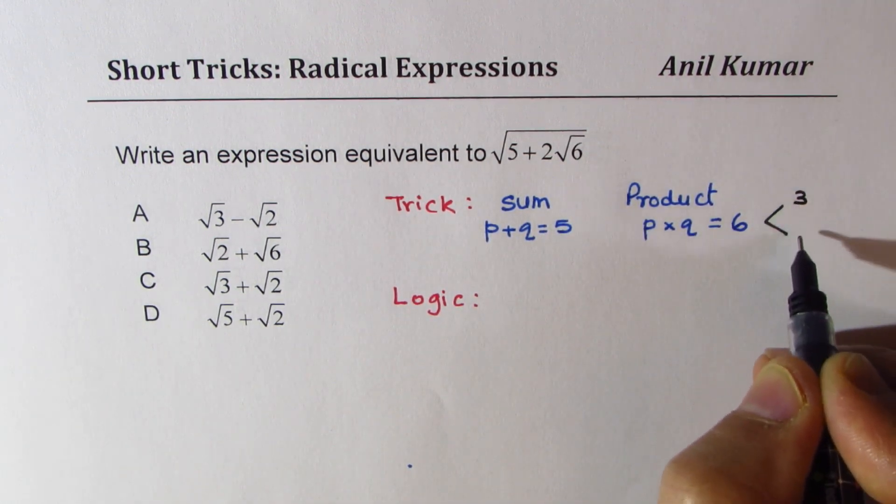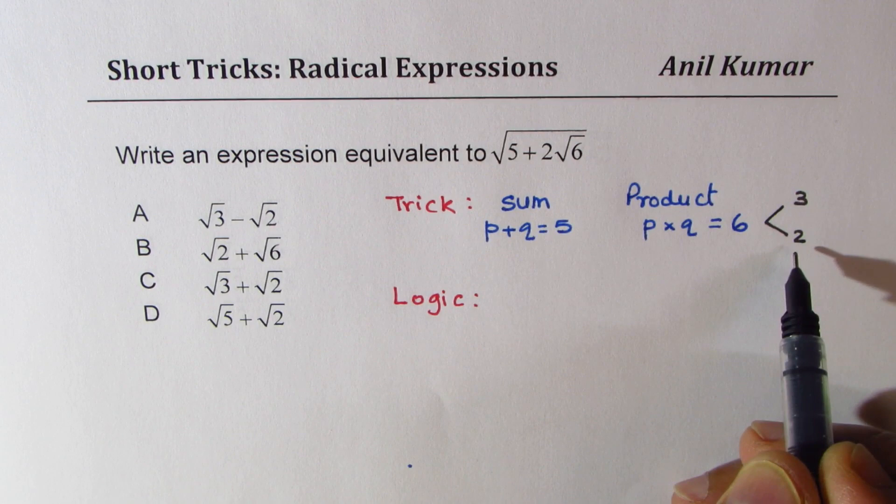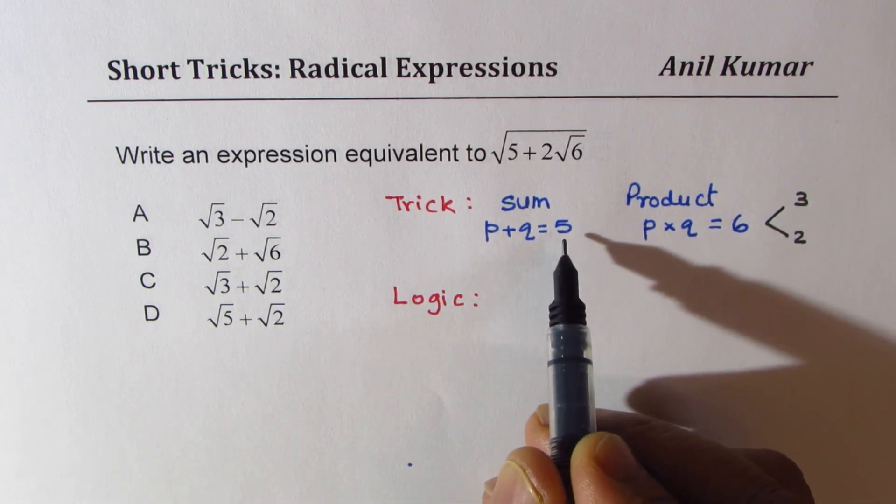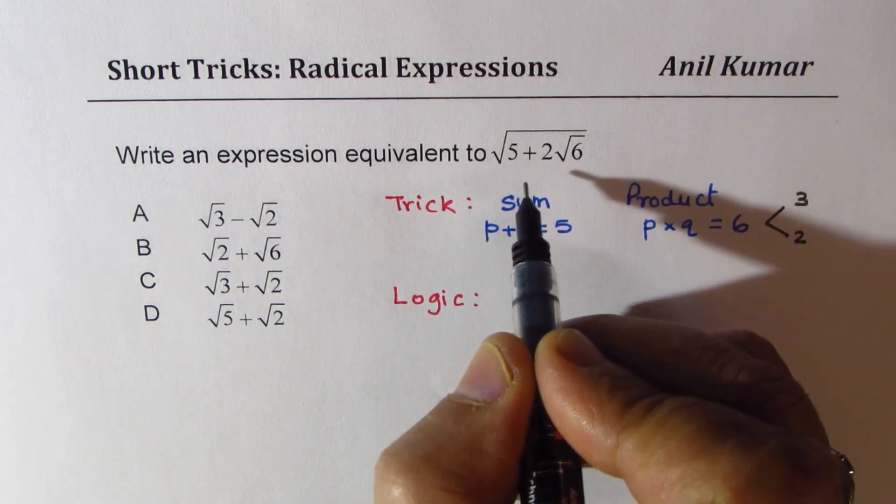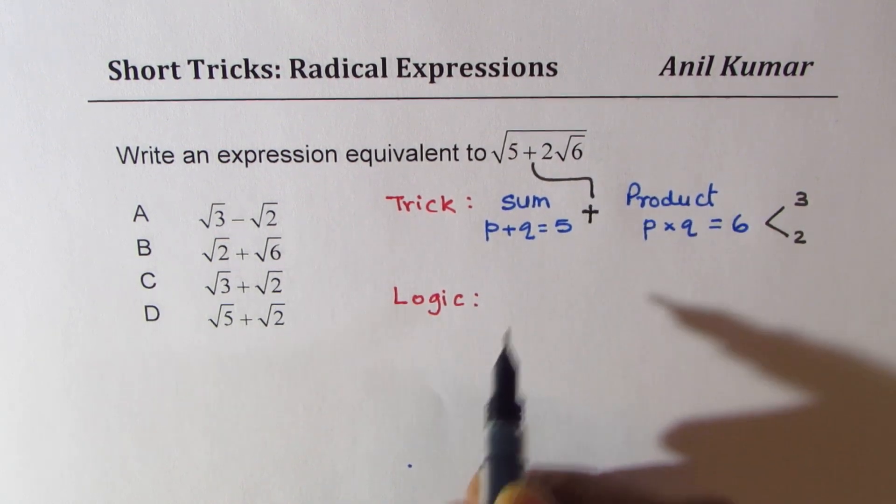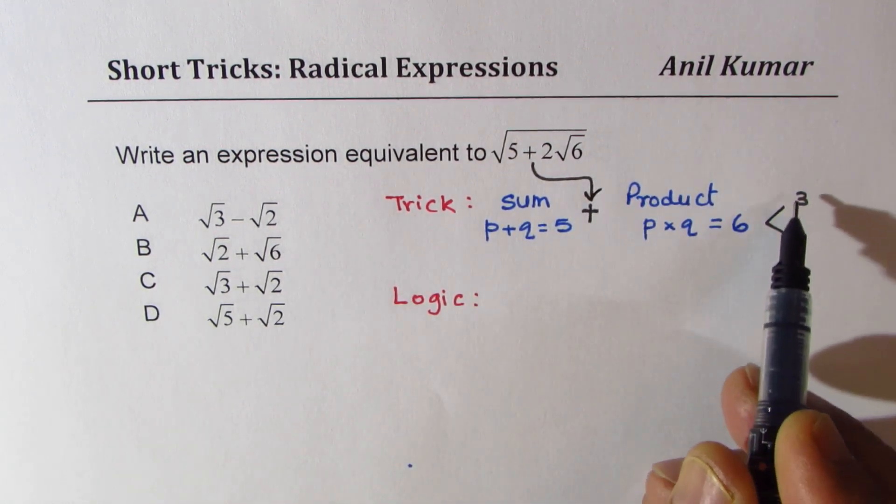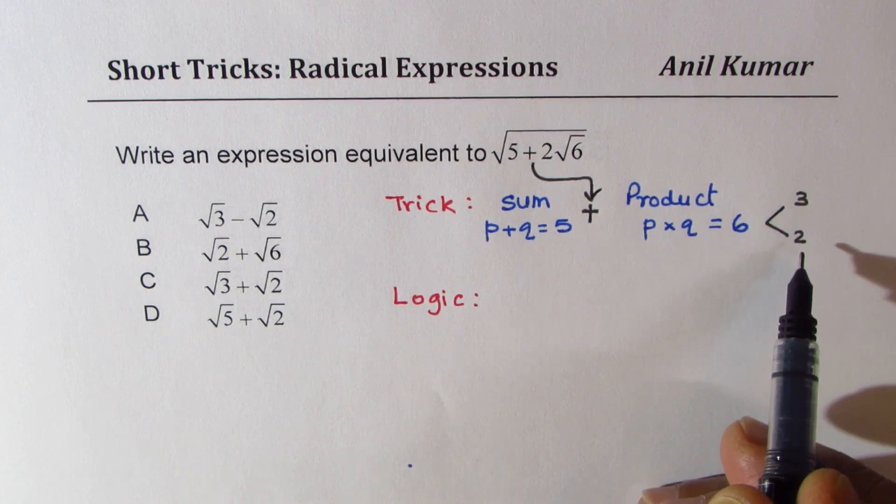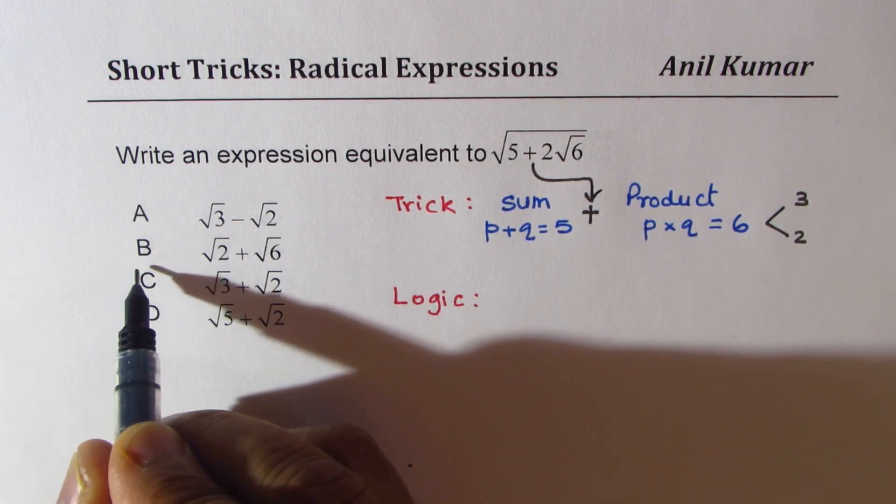3 and 2, right? 3 times 2 is 6 and 3 plus 2 is 5. In between, we have this operator, which is plus. So the answer combines square root of 3 and 2 with plus, and it is C.